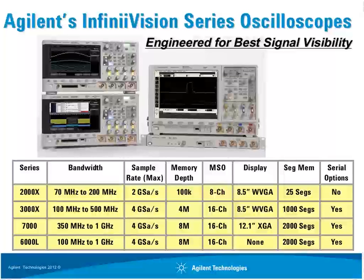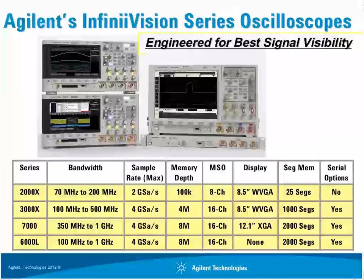This is a summary of our entire InfiniVision series of oscilloscopes, engineered for the best signal visibility through intensity-graded screens and fast waveform update rates. We cover bandwidths from 70 MHz all the way up to 1 GHz, in a variety of form factors. Our two newest scopes — the 2000 series and 3000 series — are compact. We also have the 7000B series with a large 12.1-inch XGA display and up to 8 megapoints of memory. Additionally, there is a flat 'pizza box' or 'pancake' scope designed for rack mounting — only 1U high, with no display, suitable for automated test systems controlled from a PC.